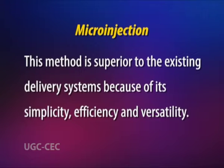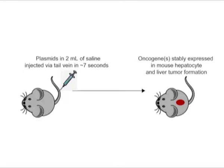This method is superior to the existing delivery system because of its simplicity, efficiency, and versatility. Liu et al. in 1999 and Zhang et al. in 1999 demonstrated high efficiency gene delivery in mice by rapid injection via a tail vein of DNA solutions in volumes equivalent to 8 to 10 percent of body weight.